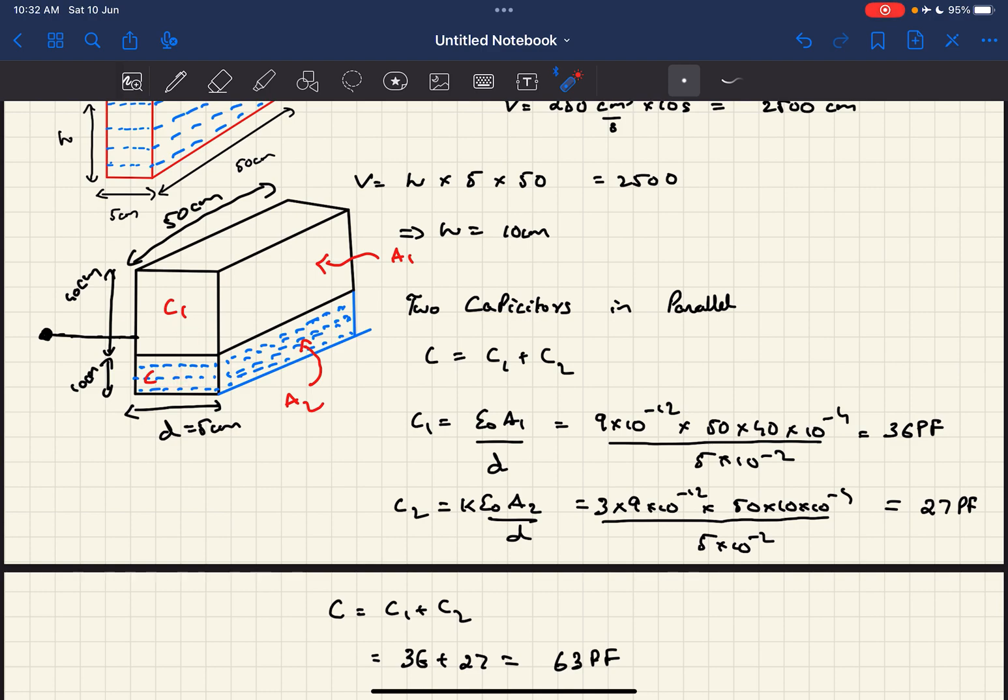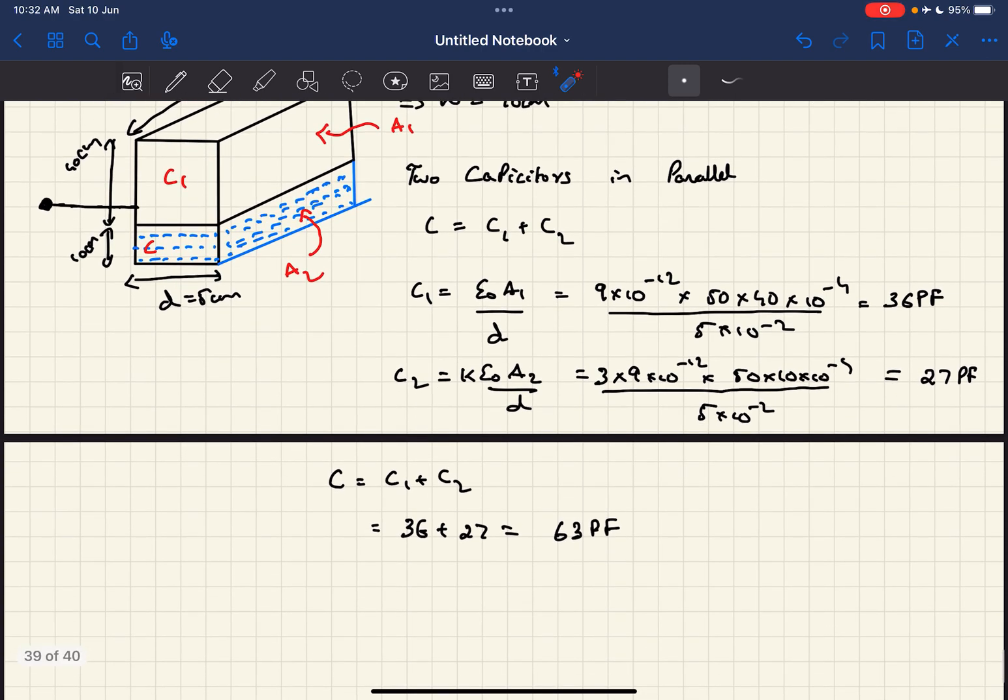This problem is just two capacitors in parallel, and the equivalent capacitance is basically the sum of the two individual capacitances. We get the final answer as 63 picofarad.